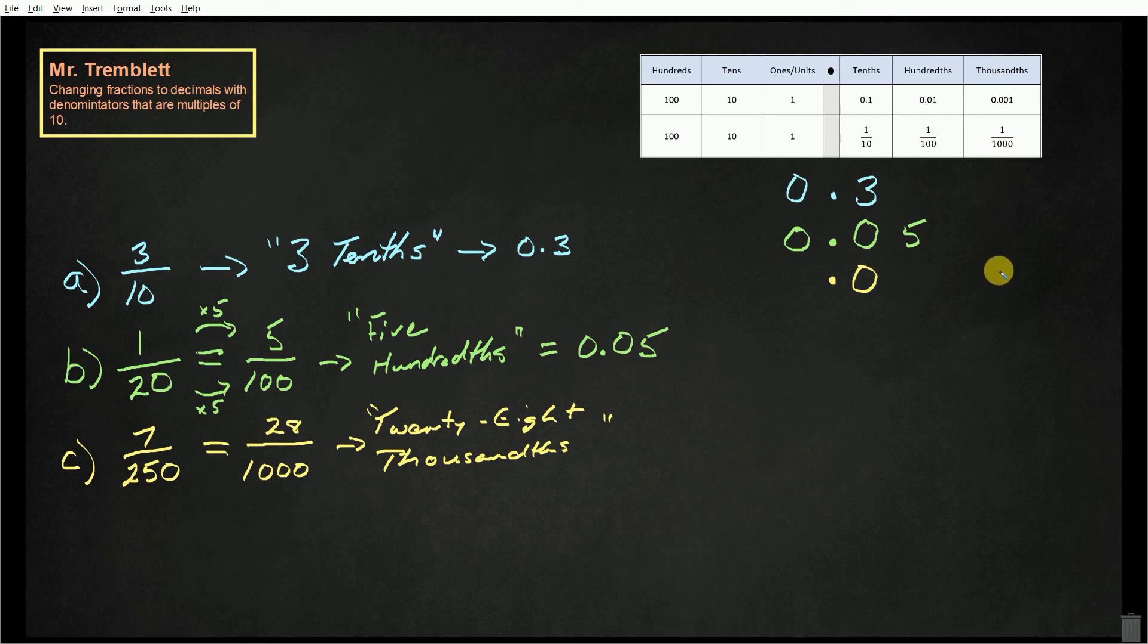If I have twenty-eight thousandths, it's the same as having eight thousandths, and then the other twenty thousandths make up two hundredths.